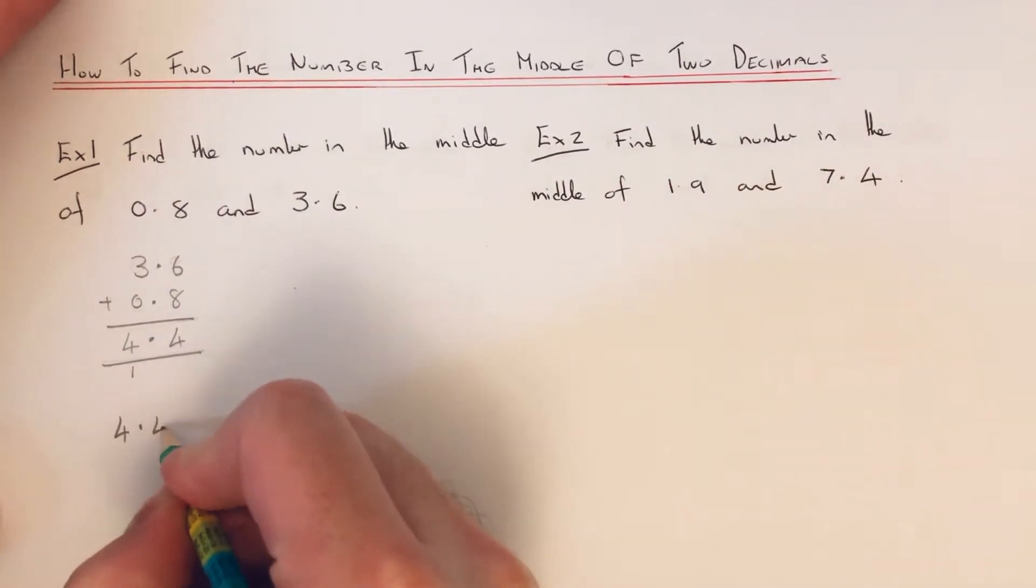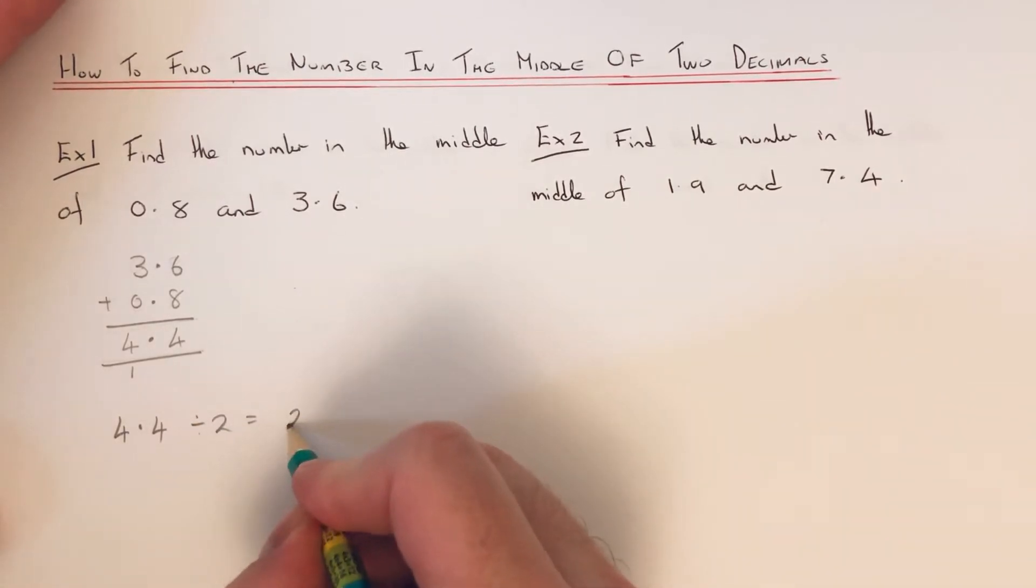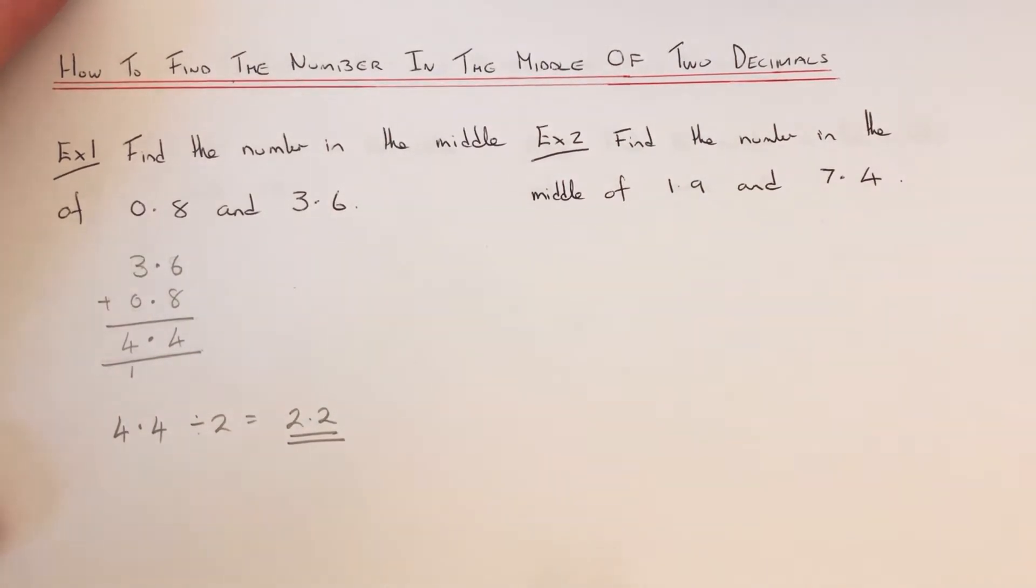So I hope the method is fine. So if we divide that by 2 we get 2.2. So that is the decimal in the middle of 0.8 and 3.6.